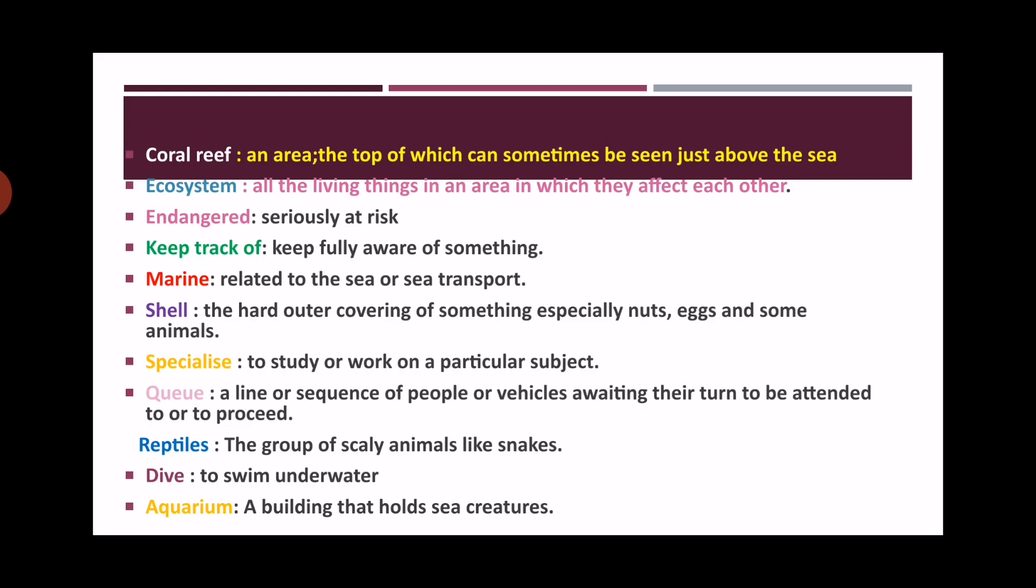Now we have the English meanings for each word. Let's start. Coral reef means an area at the top of which can sometimes be seen just above the sea. Ecosystem means all the living things in an area in which they affect each other. In this lesson, ecosystem means all the living things that live in the sea, so they live in an ecosystem.